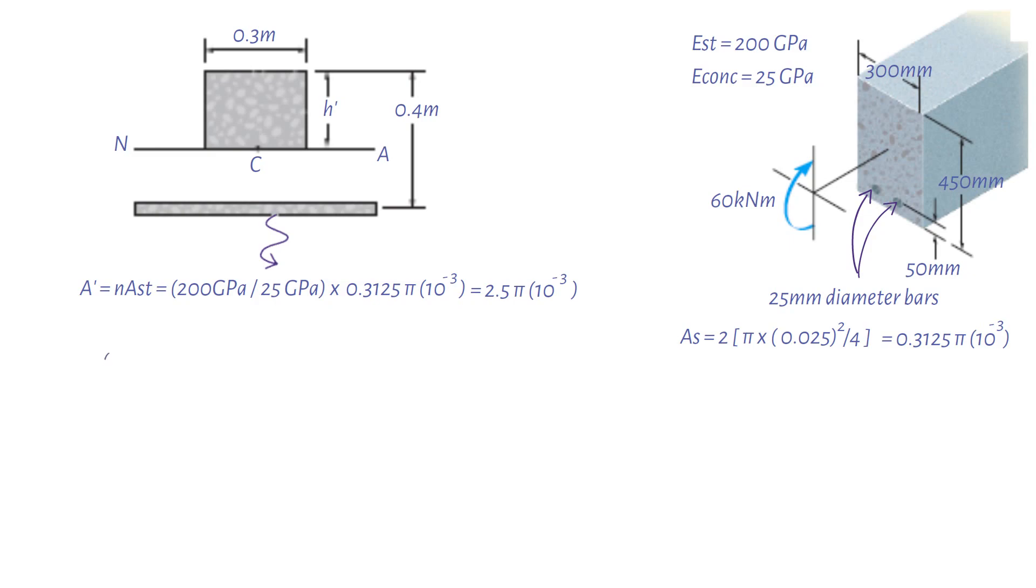We require the centroid to lie on the neutral axis. Thus, 0.3 meters times h dash times half h dash minus 2.5 pi times 10 to the power of minus 3 times 0.4 minus h dash. Solving for the positive root, we get h dash 0.1209 meters.